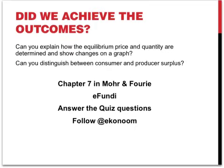So, did we achieve the outcomes of this section? Can you explain how the equilibrium price and quantity are determined and show changes on a graph? Can you distinguish between consumer and producer surplus? You can also have a look at chapter 7 in the textbook, and there are additional resources available on your fundi. Answer the quiz questions, and follow Econom on Twitter.